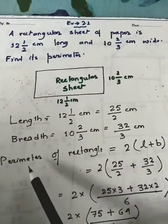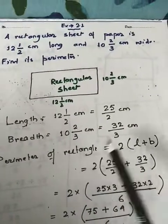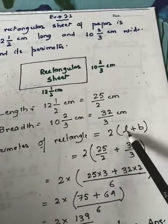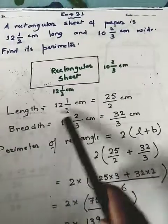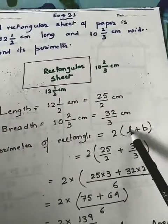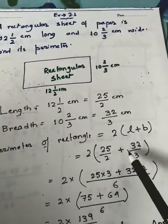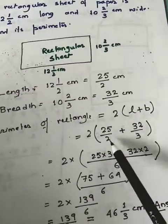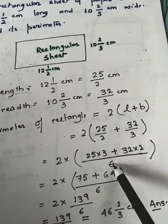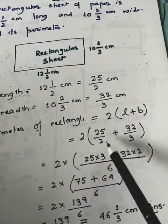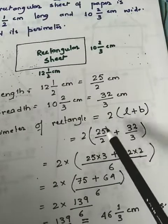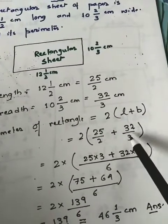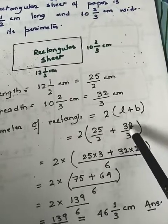Now we use the formula: perimeter of rectangle = 2 × (length + breadth). Putting in the values: 2 × (25/2 + 32/3). We need the LCM of 2 and 3, which is 6. Dividing 6 by 2 gives 3, so we get 3×25; dividing 6 by 3 gives 2, so we get 2×32.